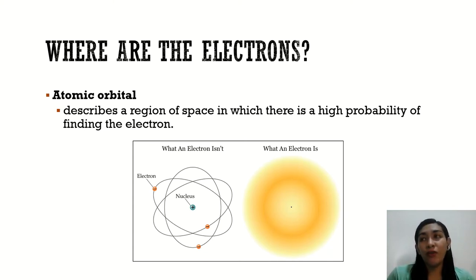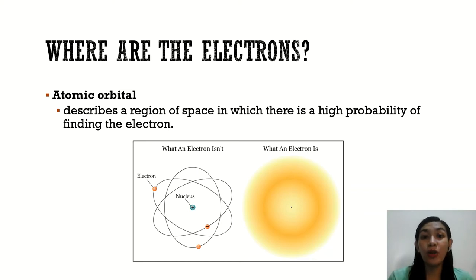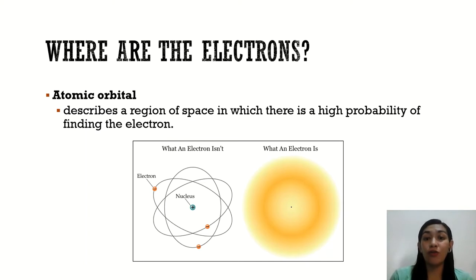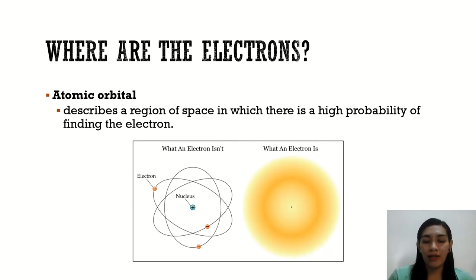If we are going to draw an atom, the usual way we draw electrons or atoms is simplified, but in reality, this is how your atom would look like. We could not easily pinpoint the exact location of your electrons. So your electrons are found in your atomic orbitals.